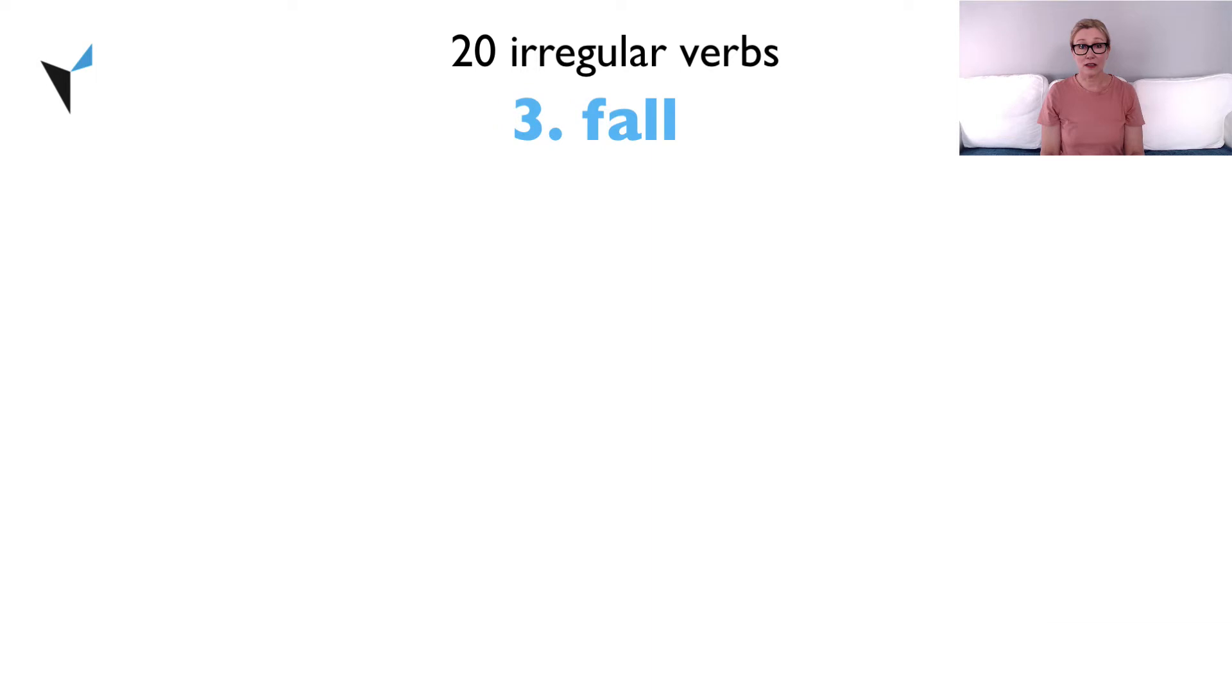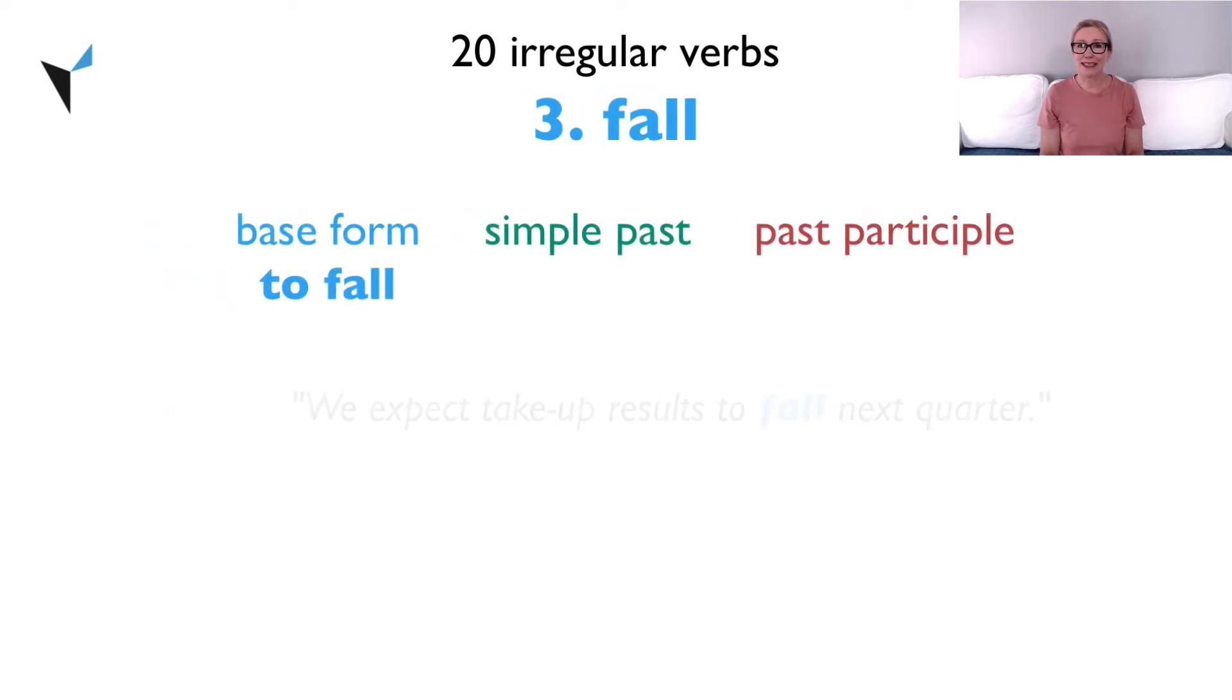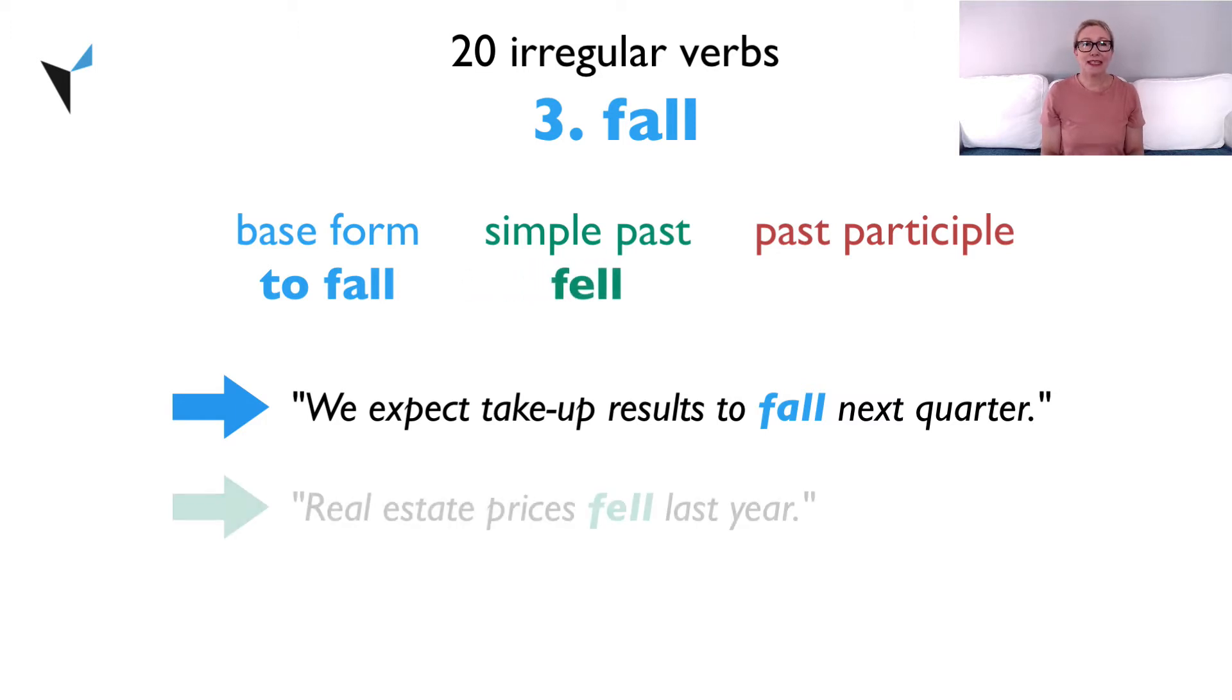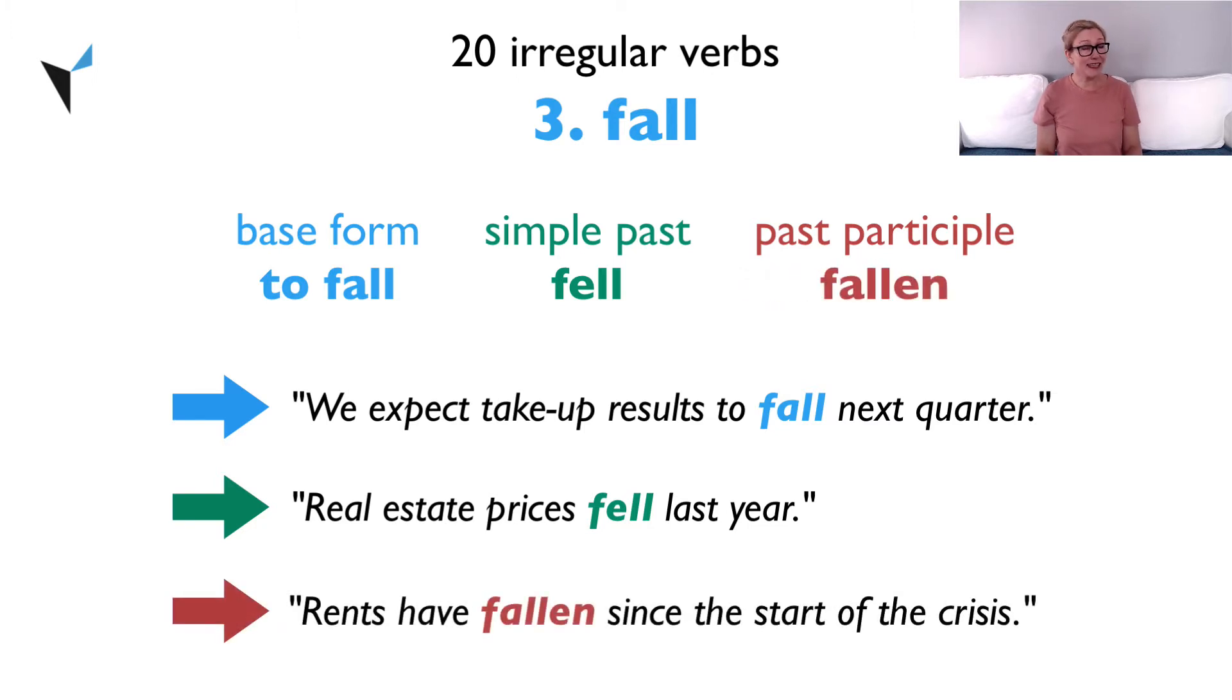Verb three, fall. The base form is to fall. We expect take-up results to fall next quarter. The simple past is fell. Real estate prices fell last year. The past participle is fallen. Rents have fallen since the start of the crisis.